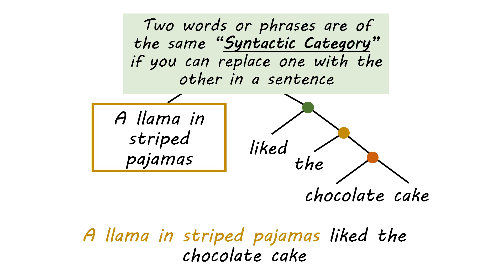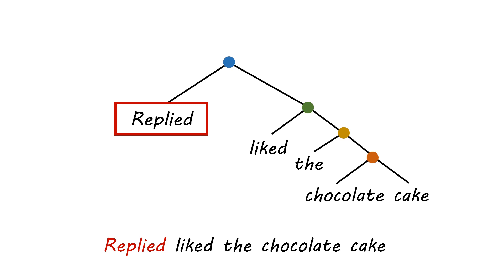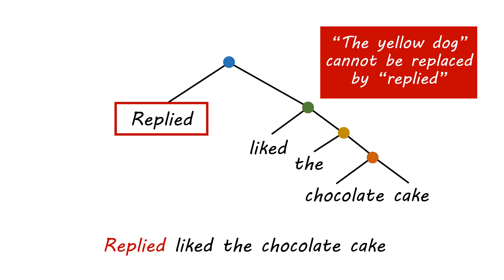When two words or phrases are of the same syntactic category, you can replace one with another within that same sentence. Anything that you can grammatically put into that golden box is going to be of the same syntactic category as "the yellow dog" - so "a llama in striped pajamas," "that baby," and "Marcus" are all of the same syntactic category. In contrast, the word "replied" is not - you can't make the sentence "replied liked the chocolate cake."